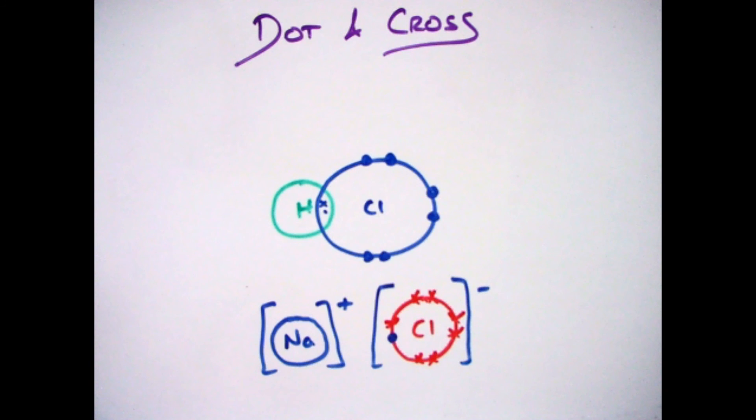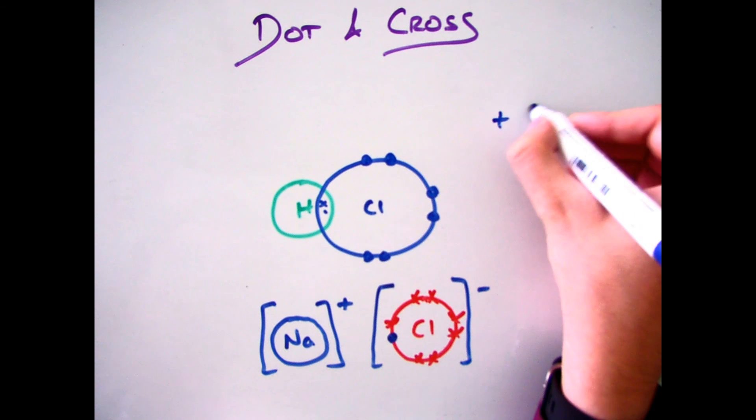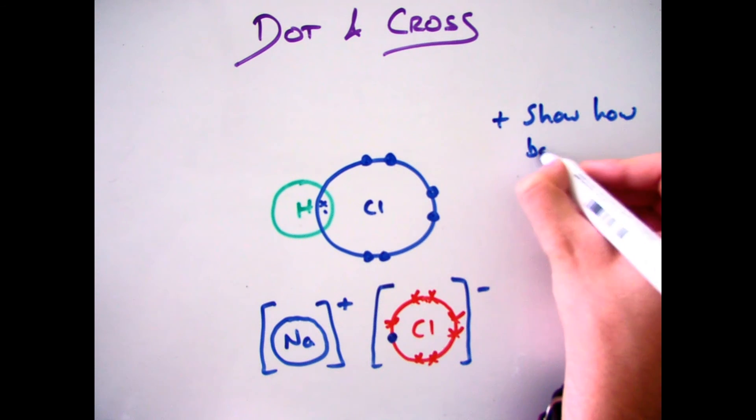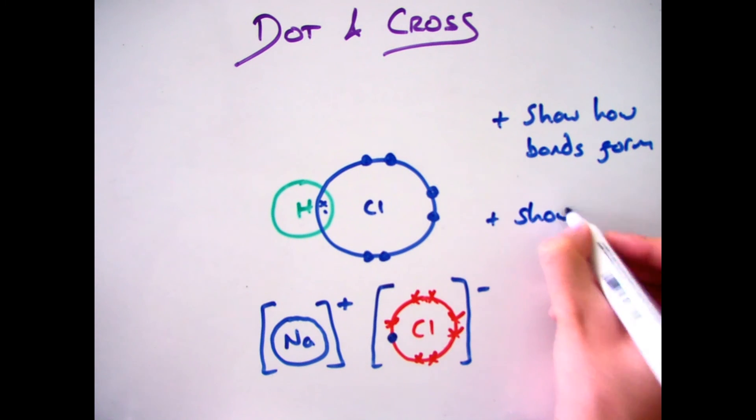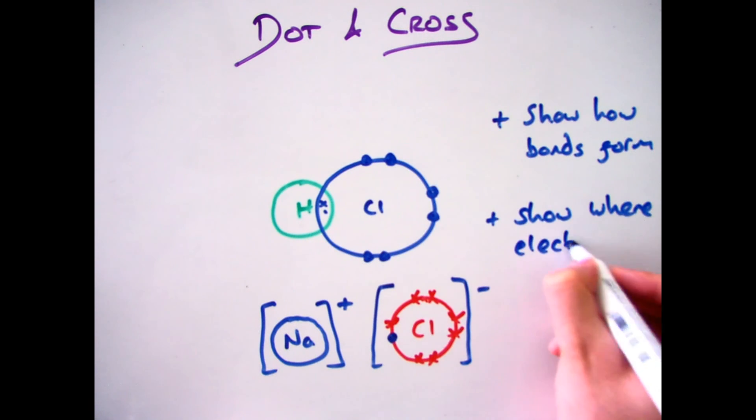So let's move on to dot and cross, which you'll have come across in your ionic and your covalent bonding. There are two key advantages for dot and cross diagrams, one of which is it shows you how the actual bonding forms and where the electrons have come from during the reaction.